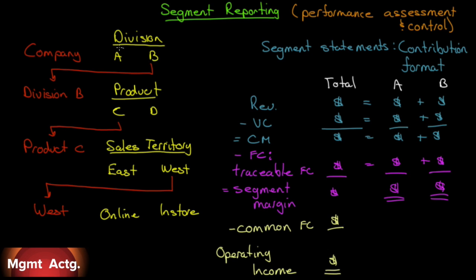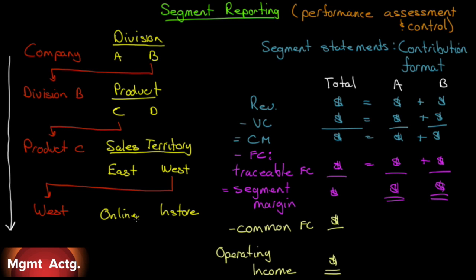Division B is a segment of the company. Product C and Product D are segments of Division B. We can further take Product C and break that down into sales territory, East and West. West would be a segment of Product C, and East would be a segment of Product C. You can then take West and break that out into sales that occur online versus sales that occur in-store. These would be considered separate segments as well. How deep we go, how far down we segment, depends on the type of information management needs. The further down you segment, the finer the granularity — meaning the finer the detail of the information you get. But there comes a limit to how far you want to segment before it no longer provides any extra useful information.